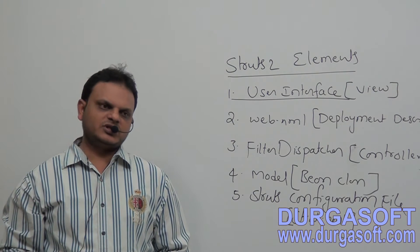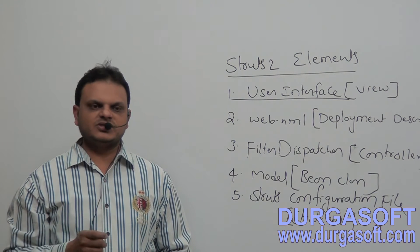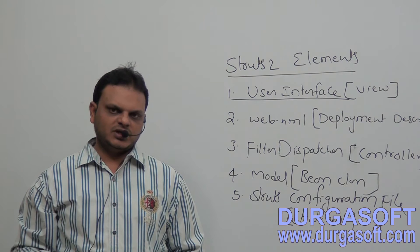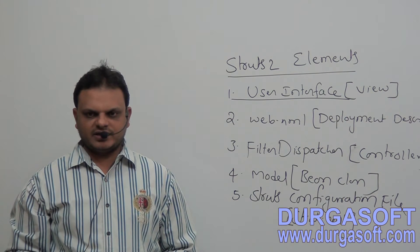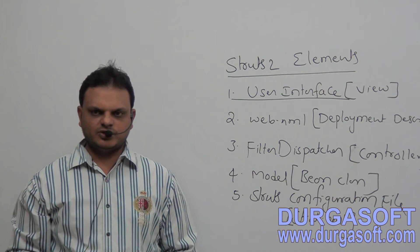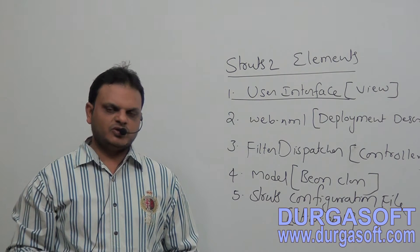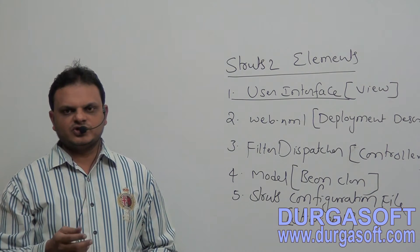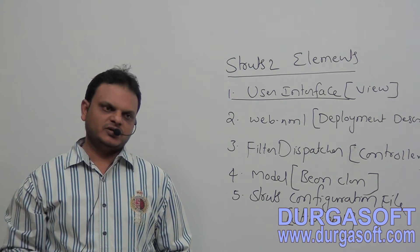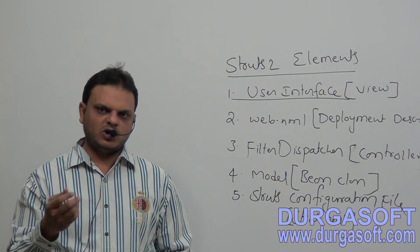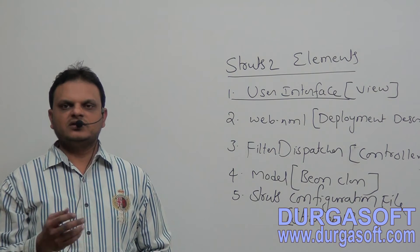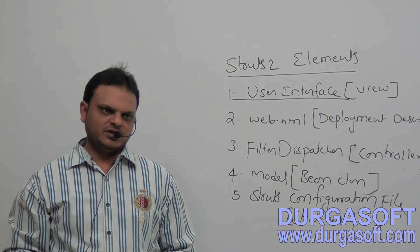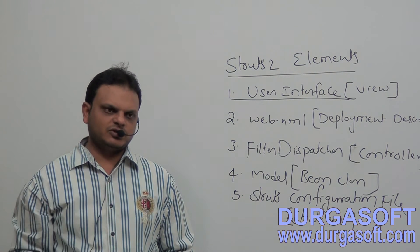If you want to prepare user interface in Struts 2 web applications, it is always advisable to use the Struts 2 provided tag library. It is not suggestible to use plain HTML directly. The complete Struts 2 tag library is available in the struts2-core version jar file. To use this tag library in JSP pages, we first need to define the taglib directive with the name and location of the tag library.